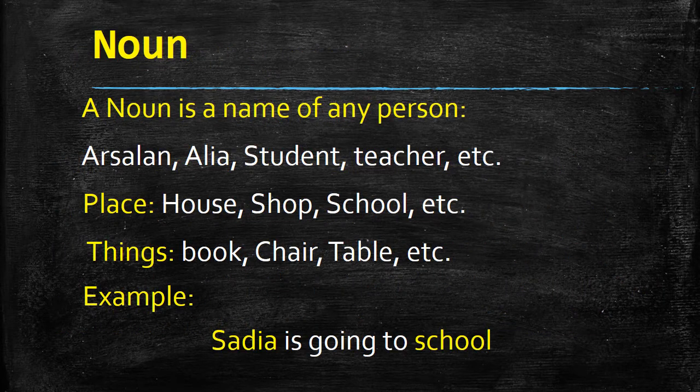Number one part of speech is called noun. A noun is a name of any person, place or thing. For example: Arsalan, Alia, student, teacher, house, shop, school, book, chair and table. For example, in the sentence 'Sadia is going to school' — Sadia is a noun, it is the name of a person. And the second noun here is school, which is a place.